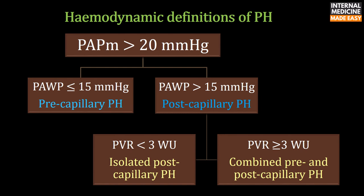Hemodynamic definitions of pulmonary hypertension: mean pulmonary artery pressure is more than 20 mmHg. If pulmonary artery wedge pressure is less than or equal to 15 mmHg, it is called pre-capillary pulmonary hypertension. If wedge pressure is more than 15 mmHg, it is post-capillary. In post-capillary PH, if pulmonary vascular resistance is less than 3 Wood units it is isolated post-capillary PH; if PVR is 3 or more Wood units it is combined pre- and post-capillary PH.